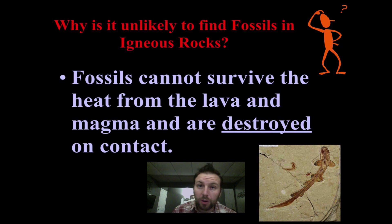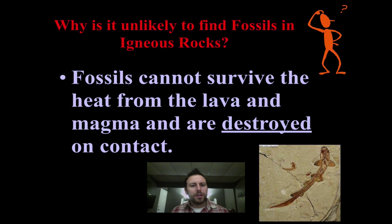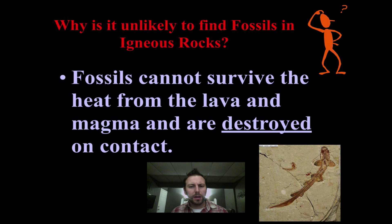Another feature we do not find in igneous rocks are fossils. Remember, igneous rocks form from the cooling and solidification of lava. If you have a fossil — a remain of an organism that was once alive — it's not going to survive that magma, lava, or those increased temperatures. So we do not find any fossils in igneous rocks. If you pick up a rock and see an imprint of a leaf, shell, or any other fossil, it's definitely not igneous — it must be sedimentary.